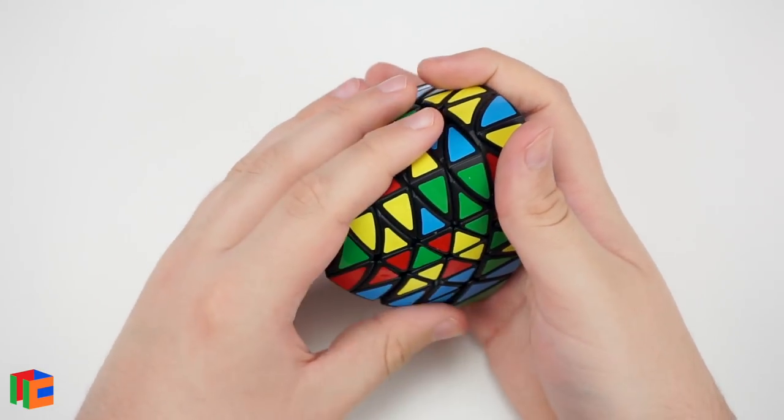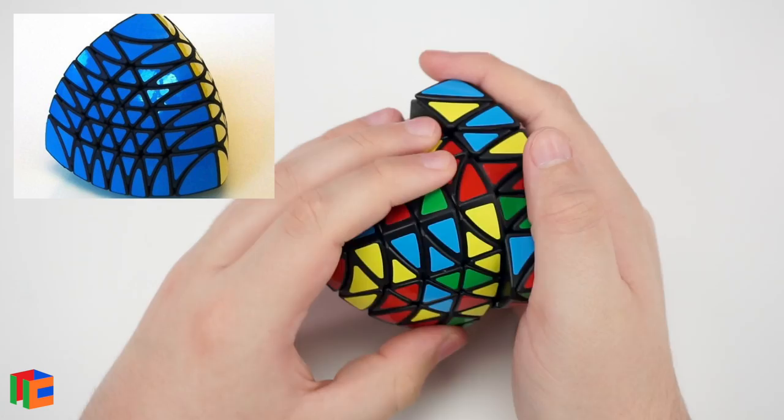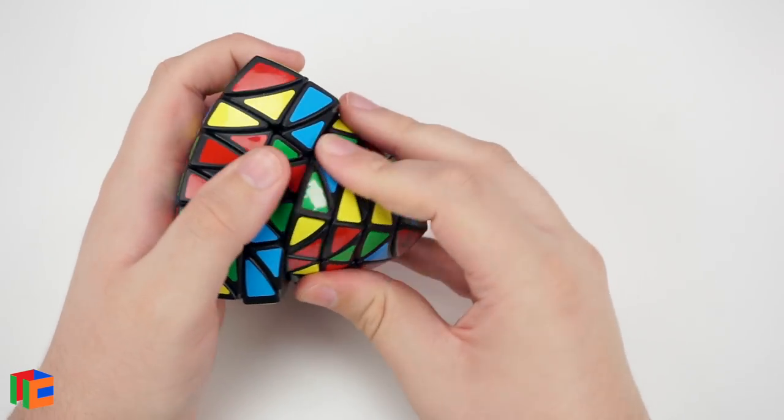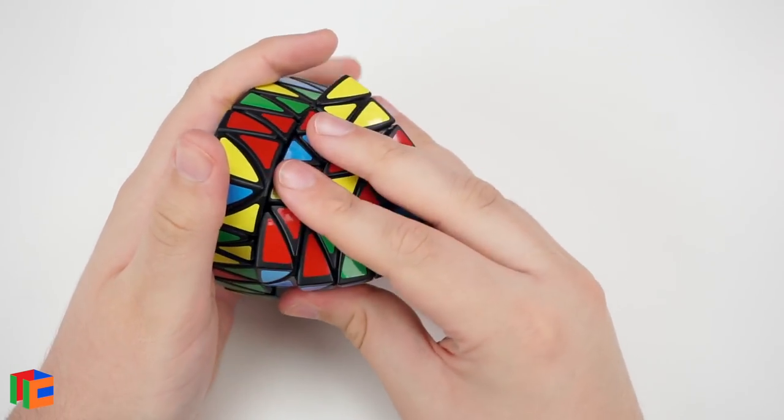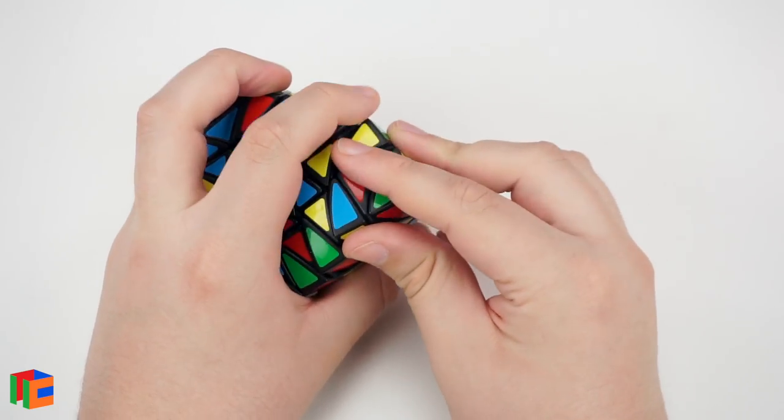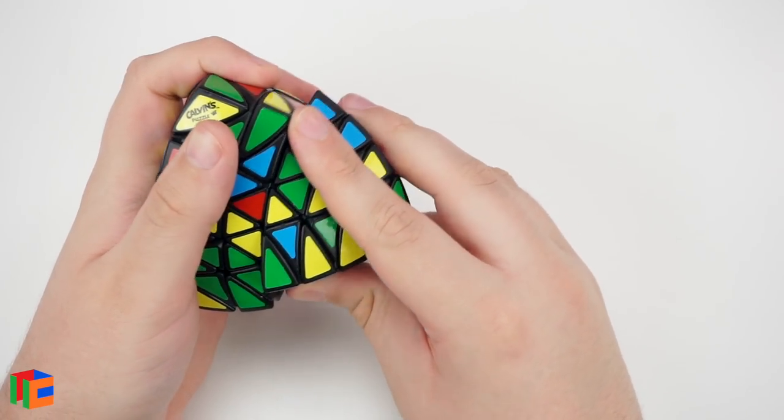This is pretty neat. I do want to get the Emperor Pyraminx, which is the 7-layer version. That one looks really cool as well. I don't know if that one will ever be mass-produced, but I just might get the 3D printed version, since I'm sure it'll be a higher quality than the mass-produced version anyway.